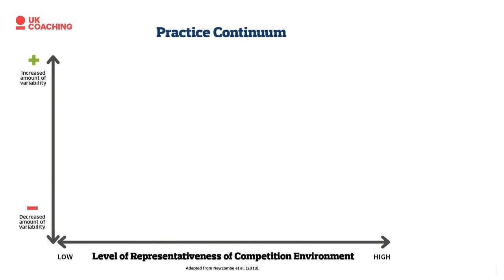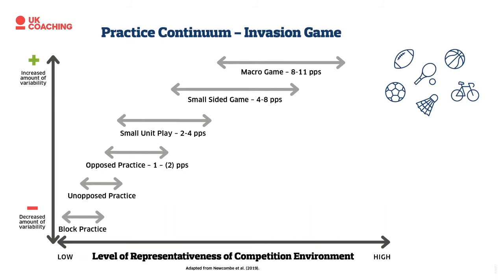I'll talk through an example from invasion games. At the top end we have macro games — for soccer or field hockey where numbers are 11-a-side, the top end is a macro game with 8 to 11 players. If we're going after larger-scale tactical elements, or physical intentions requiring similar running and sprint distances to a match, we might operate at this end. One disadvantage of a macro game is players tend to get fewer touches on the ball — a striker in soccer may only get one shot in the game, so if you want lots of repetitions practicing shooting, this is probably not the right type of practice.